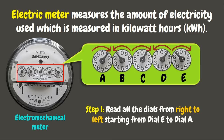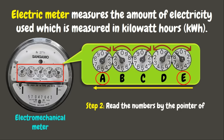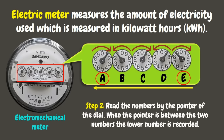To read the electric meter, the first step is to read all dials from right to left, starting from dial E to dial A. The next step is to read the numbers by the pointer of each dial. Take note that when the pointer is between two numbers, the lower or smaller number will be recorded. For example, let us start from dial E.